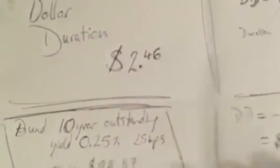In this case, it's the same bond as in the previous video, so I've got a 10-year bond. The yield that I'm going to measure is a 25 basis points up or down change.